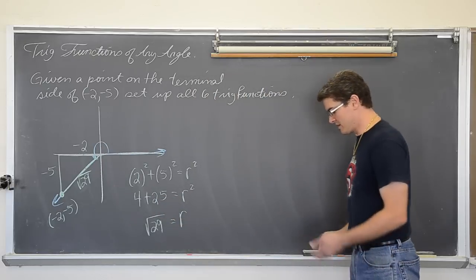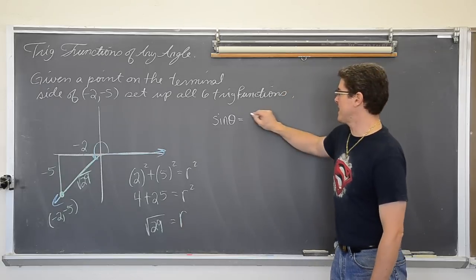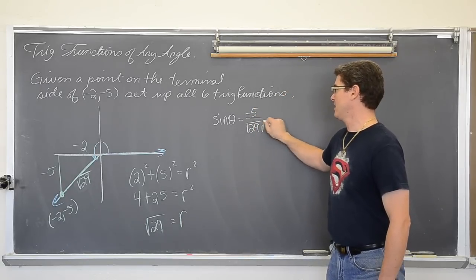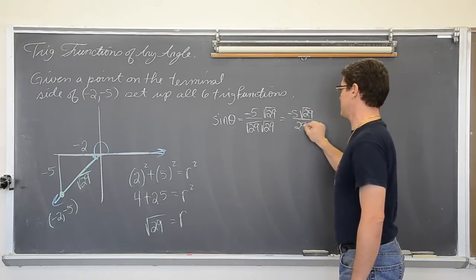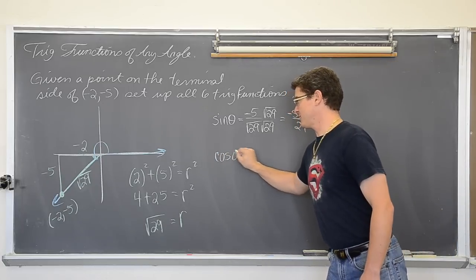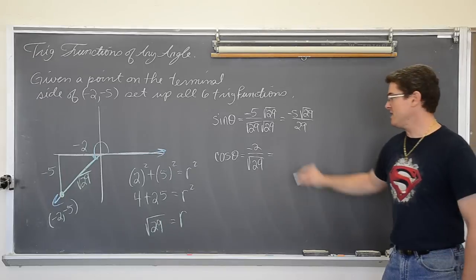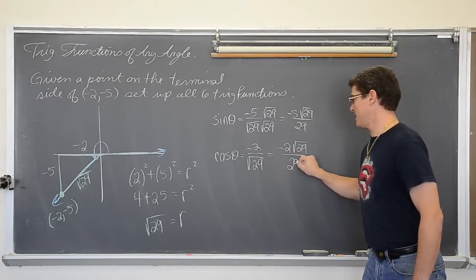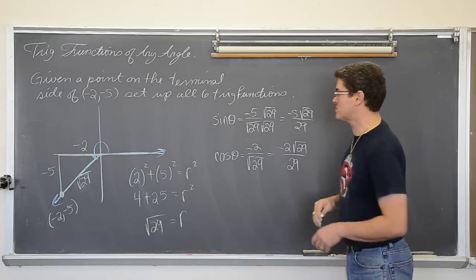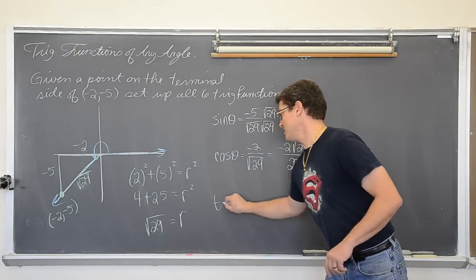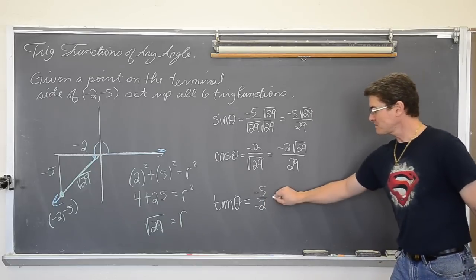We won't be happy with square roots in the denominators, so we'll have to rationalize some of our answers. The sine of theta is y over r, so it is negative five over the square root of 29. Cosine of theta is x over r, so it is negative two over the square root of 29. When you rationalize that you will get negative two square root of 29 over 29. Remember that sine is y over r and cosine is x over r — in quadrant three those x and y values are negative, so make sure these answers are both negative.